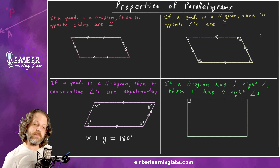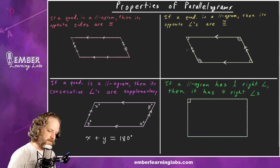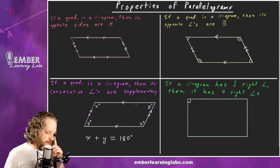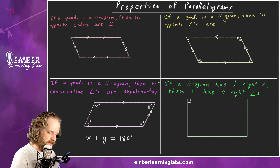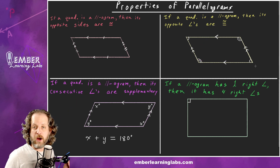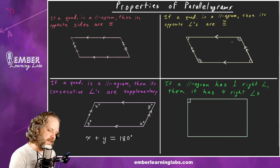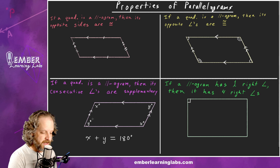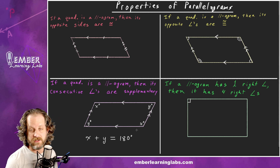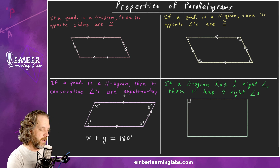Theorem 2: If a quadrilateral is a parallelogram, then its opposite angles are congruent. That one takes a little more writing but is pretty simple. You could have figured these out from theorems related to parallel lines.